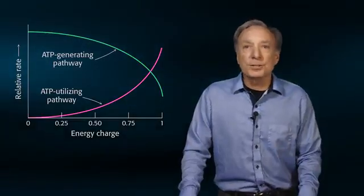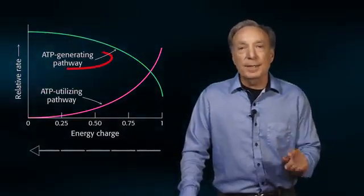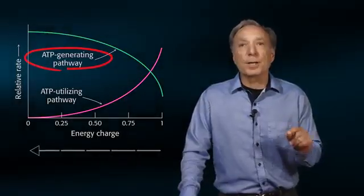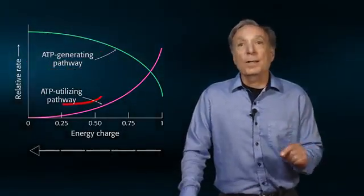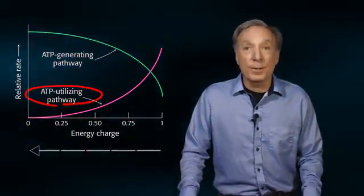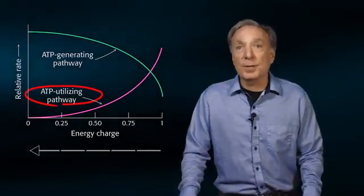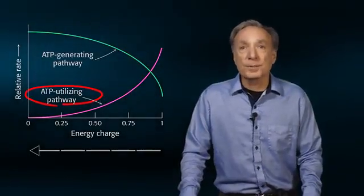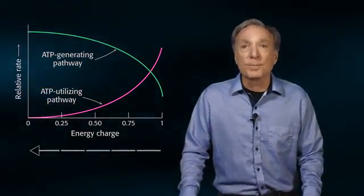The energy charge will drop during exercise dependent upon the exercise intensity and rate of ATP utilization. Notice that as the energy charge decreases, ATP-generating pathways are turned on, while ATP-utilizing pathways, such as biosynthetic reactions, are turned off to save the precious ATP for muscle contraction.